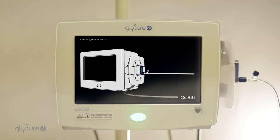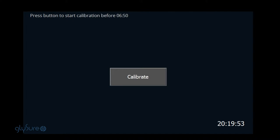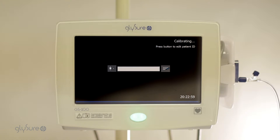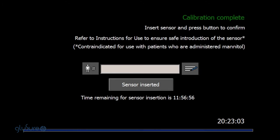A temperature check will automatically be initiated. Completion of the temperature check will prompt the start calibration screen. Press the calibrate button to start calibration, before the time indicated at the top of the screen. Successful completion of calibration will be displayed on the calibration complete screen.